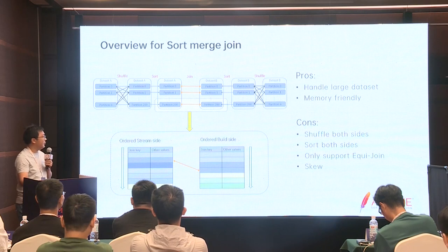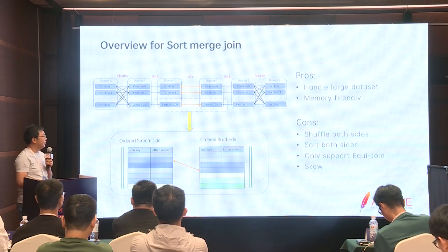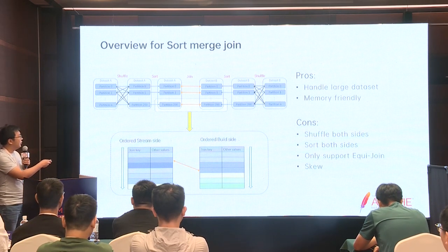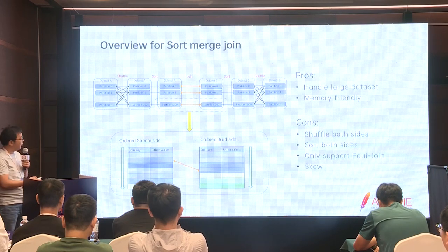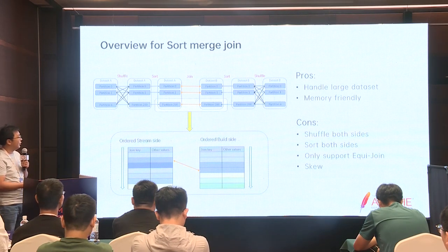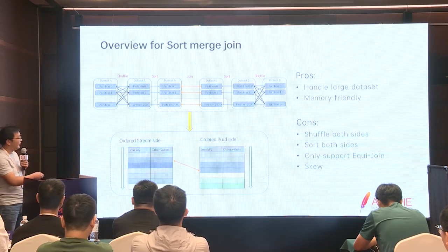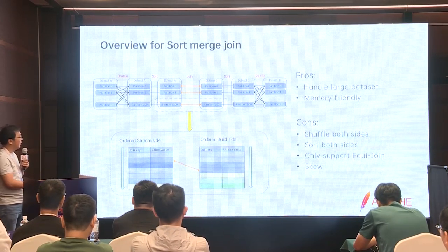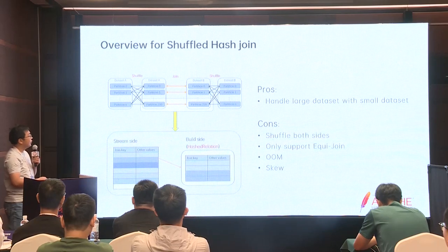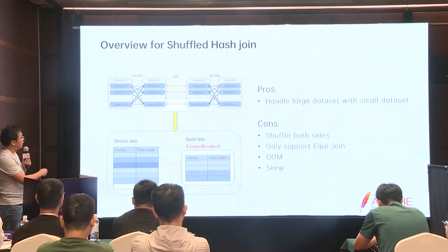它的好处是可以处理非常大的数据集，而且内存相对来说友好一点。它的缺点很明显：两边都需要Shuffle，只支持等值Join，有可能有数据倾斜——同样一个Key可能在某一个Partition里面出现很多次，比方说Key等于-999可能有一亿多次出现在同一个Partition里面，这个Partition会非常大。 (Pros: handles very large datasets, relatively memory friendly. Cons: both sides need shuffle, only supports equi-join, potential data skew.)